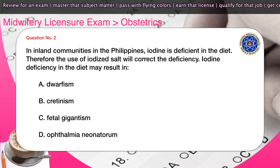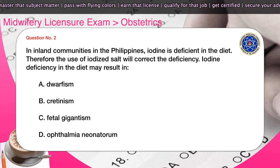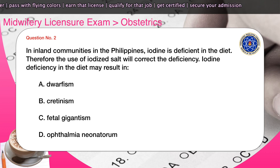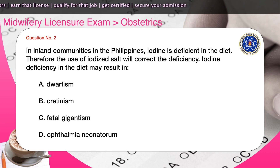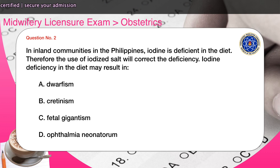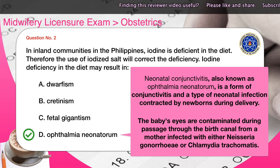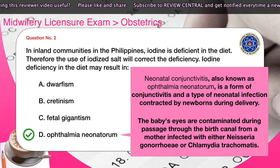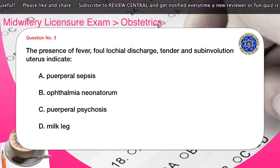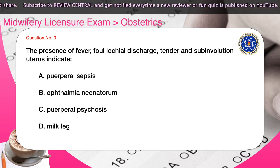Question number two: In inland communities in the Philippines, iodine is deficient in the diet; therefore the use of iodized salt will correct the deficiency. Iodine deficiency in the diet may result in — A) dwarfism, B) cretinism, C) fetal gigantism, D) ophthalmia neonatorum. The correct answer is D. Neonatal conjunctivitis, also known as ophthalmia neonatorum, is a form of conjunctivitis and a type of neonatal infection contracted by newborns during delivery, when the baby's eyes are contaminated during passage through the birth canal from a mother infected with either Neisseria gonorrhoeae or Chlamydia trachomatis.